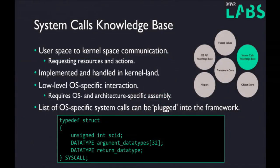The next major part of the OS-specific stuff is the system calls. System calls are a low-level method for user space to kernel space communications, and these have to be implemented per architecture and operating system. For open source systems like OSX or any Unix-based system, these tend to be open source. For Windows it's a little bit more difficult — you have to reverse engineer them or rely on other sources, maybe ReactOS or something like that. At the bottom there you can see what a syscall looks like internally to the fuzzer: a syscall ID, the arguments, and the return data type.